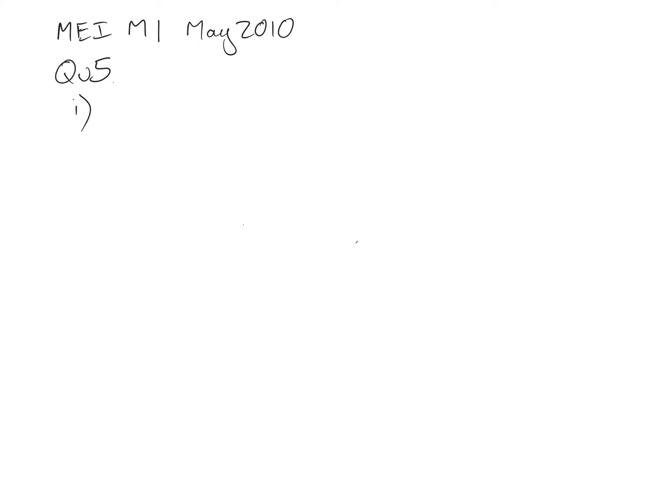Calculate the bearing of the vector minus 4i minus 6j. It says at the top the unit vectors i and j are pointing east and north respectively, so i is pointing east and j is pointing north, so I'd get that set up there to begin with.